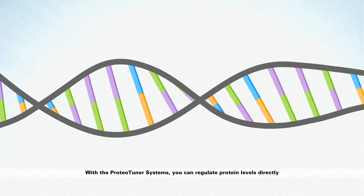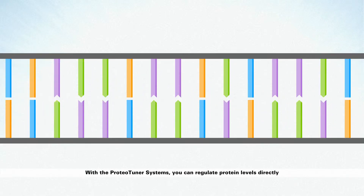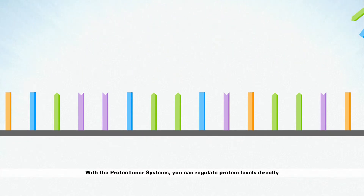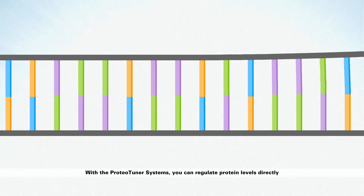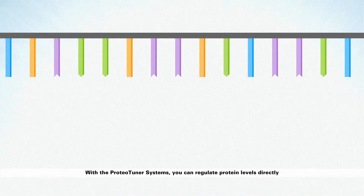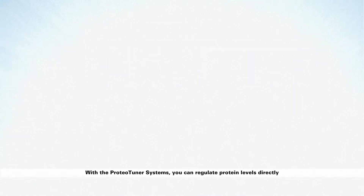The proteoteric system regulates protein levels by acting directly on the protein. This is unlike other methods that act either on the cDNA synthesis level or at the mRNA level.